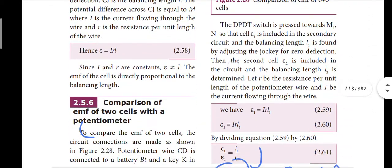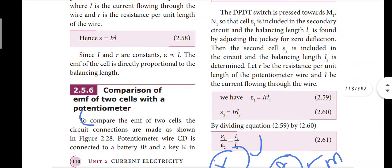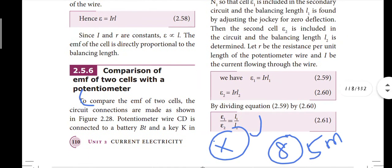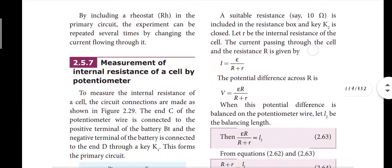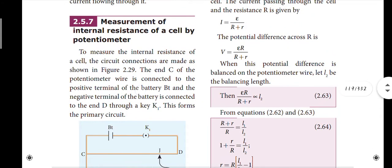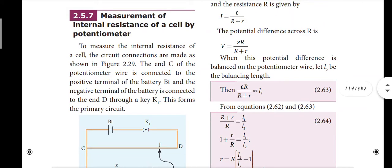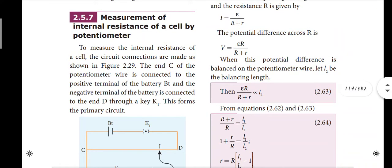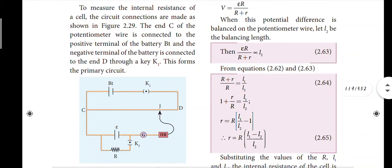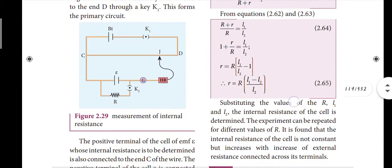Comparison of EMF of two cells - this is an important question. This is a question, so the answer shows the potentiometer setup with resistance. This potentiometer is the most important pattern. The question is important, 10 marks. In the book back, this is an important question.